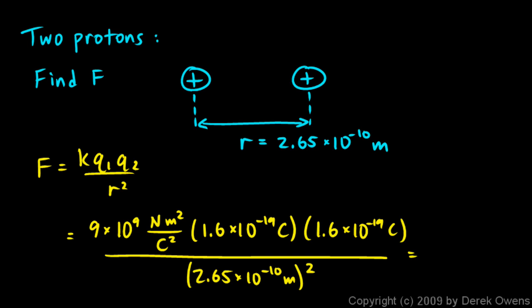And we put all that into the calculator, and we end up with an answer. 3.28 times 10 to the negative 9th newtons. And so this 10 to the negative 9th is billionths. So it's 3.28 billionths of a newton. That's the electrostatic force between two protons at that very tiny distance.